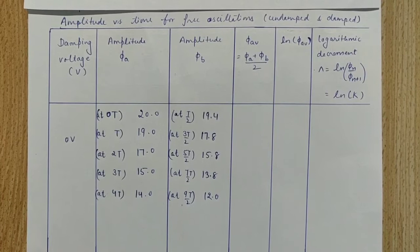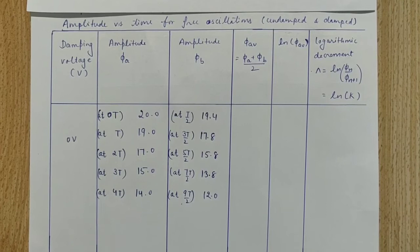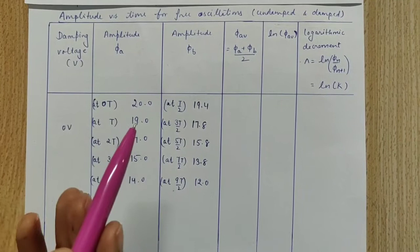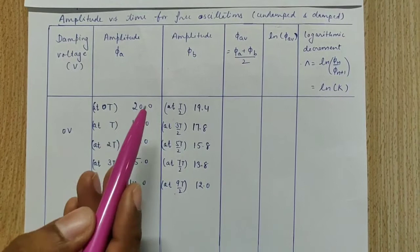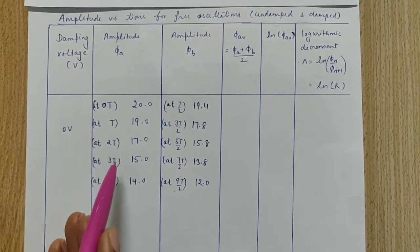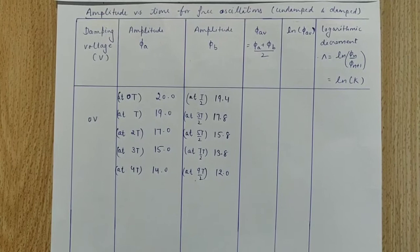For the case when the voltage was 0, the Pohl's pendulum experienced undamped oscillations. We have observed the amplitude on both the left and right sides of the Pohl's wheel. Initially the maximum amplitude was 20 degrees. After one complete rotation or after time T, this is the amplitude; and then at 2T, 3T, 4T, and similarly on the right side.